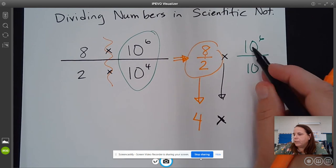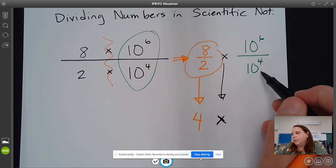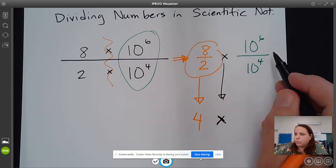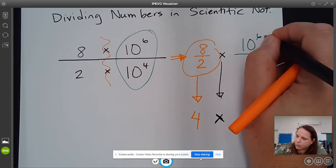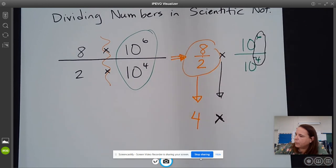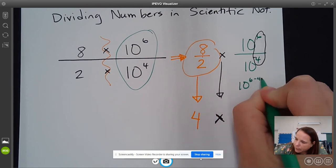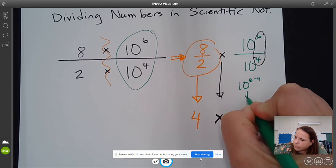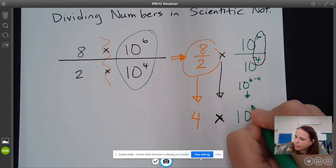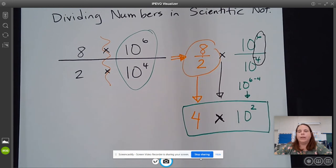And then because these have the same base, they are exponential expressions with the same base, the rule here is that we are going to subtract these exponents. So I'm going to write a little in-between step. So 10 to the, and we're going to subtract those exponents. And so what we are left with is 10 to the second. And that would be our answer in scientific notation.